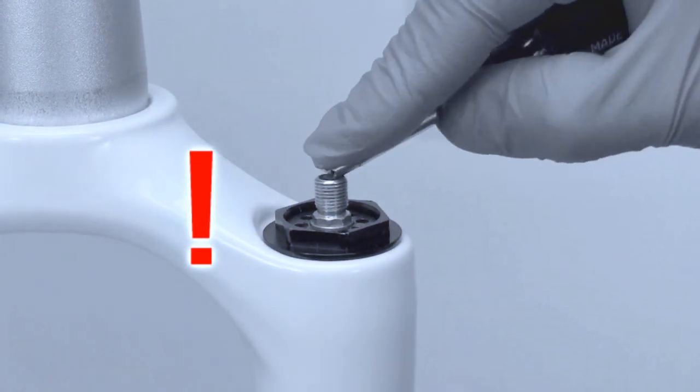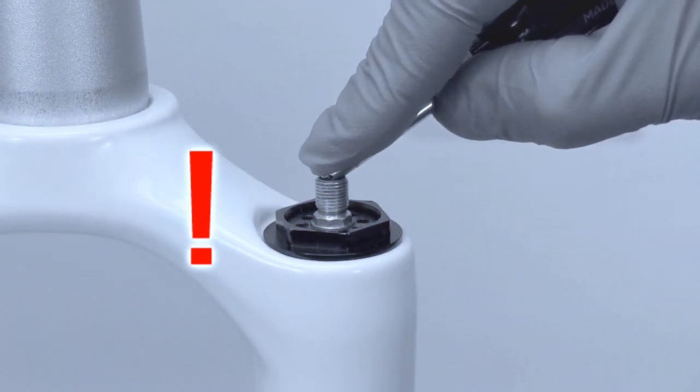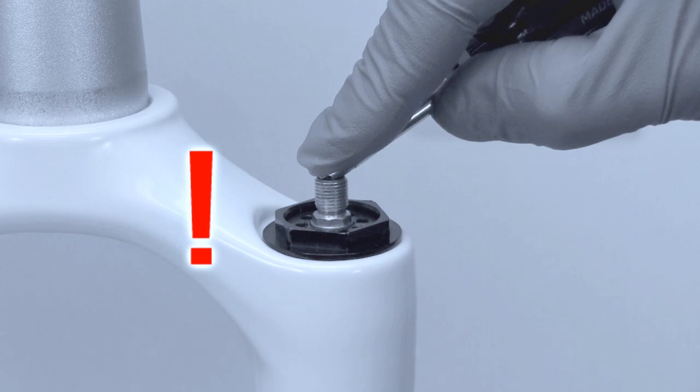Remember, before starting any disassembly of an air fork, including lower leg removal, you must remove all of the air pressure from the fork.